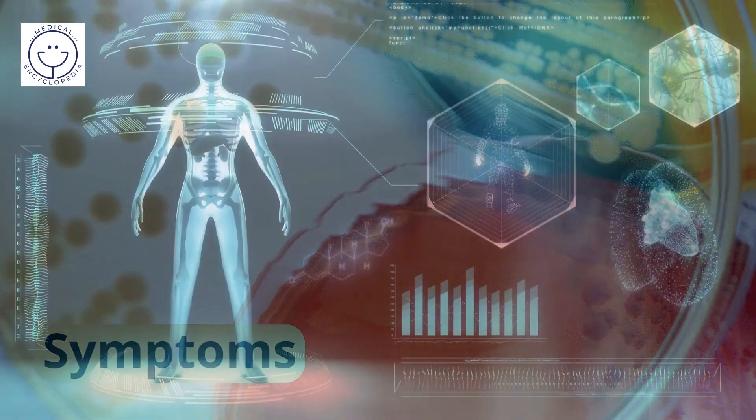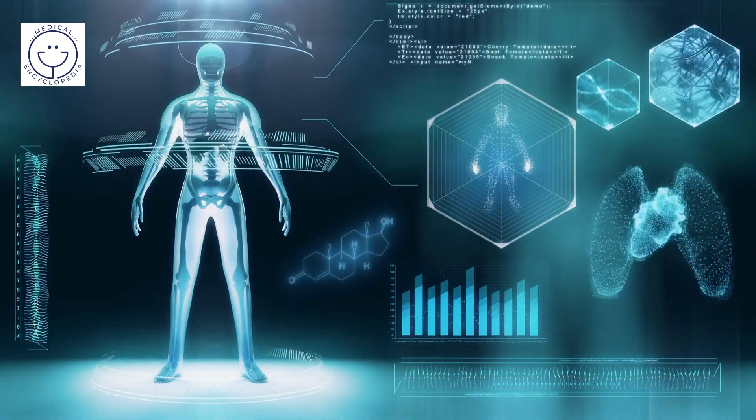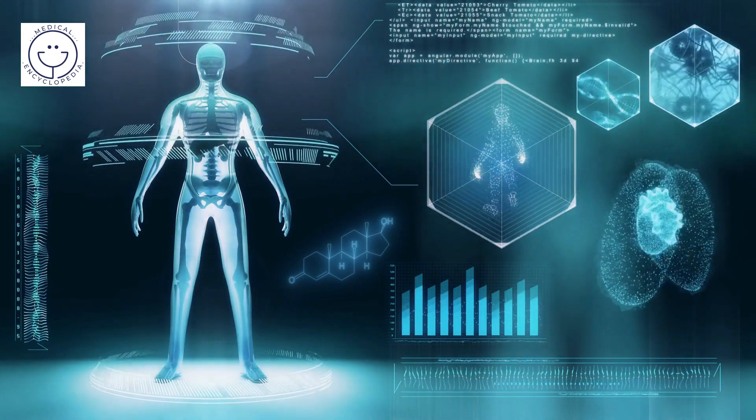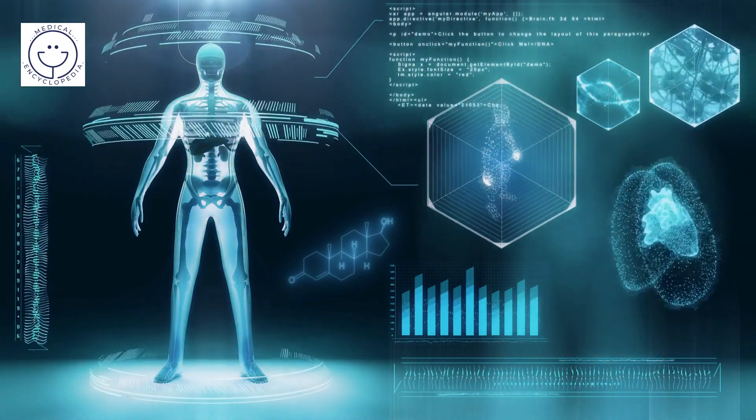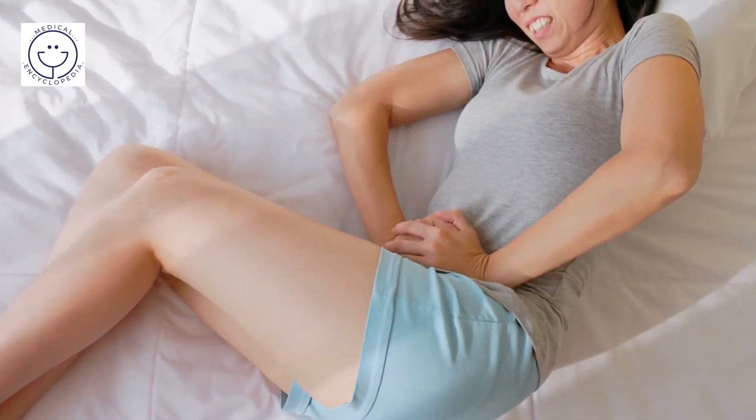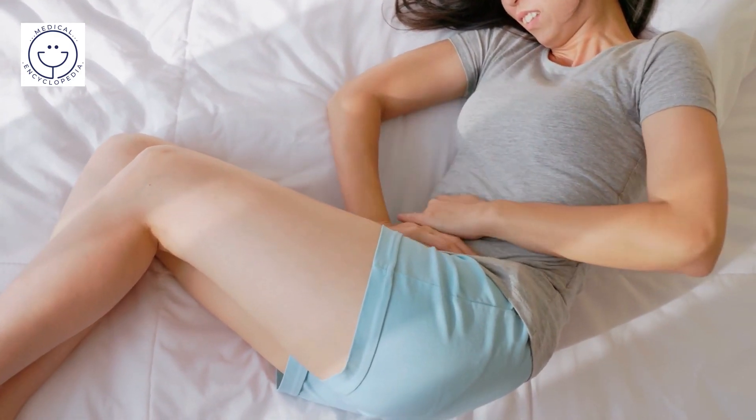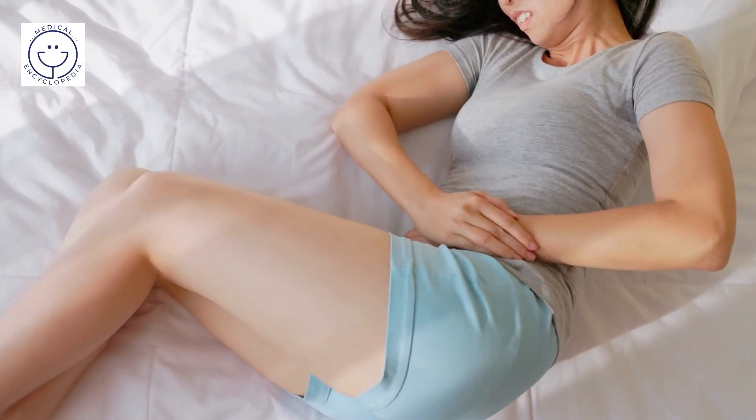Symptoms. E. coli can be a pathogenic bacterium, that is, it can cause disease in humans. Some strains of E. coli produce toxins that can cause diarrhea, abdominal pain, and vomiting.